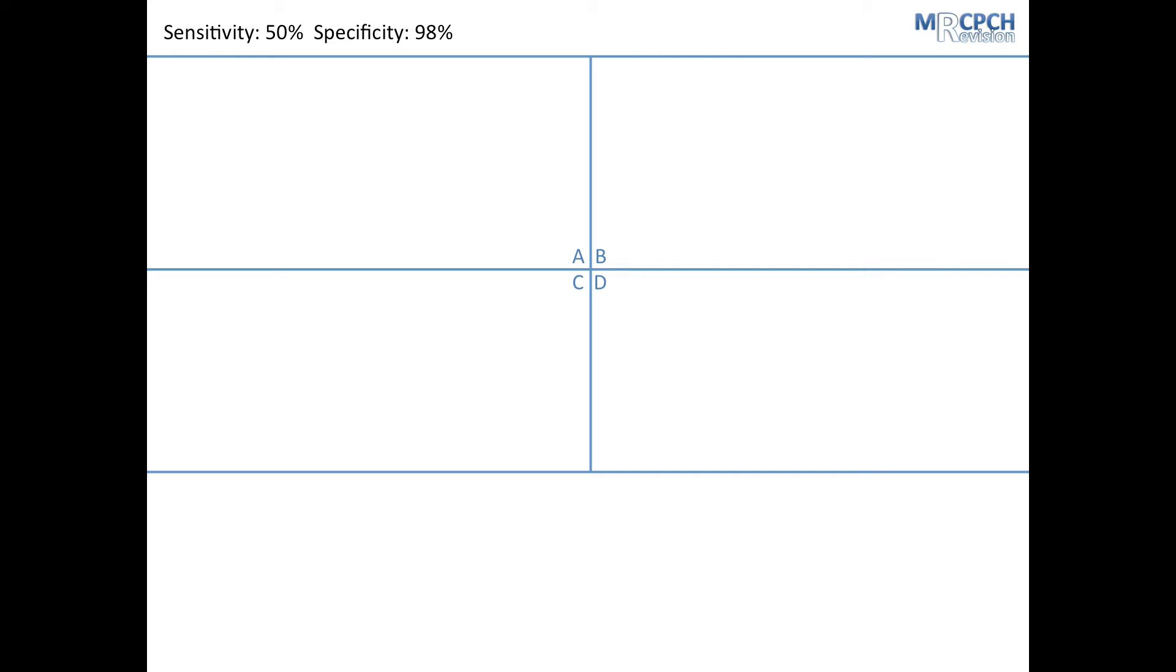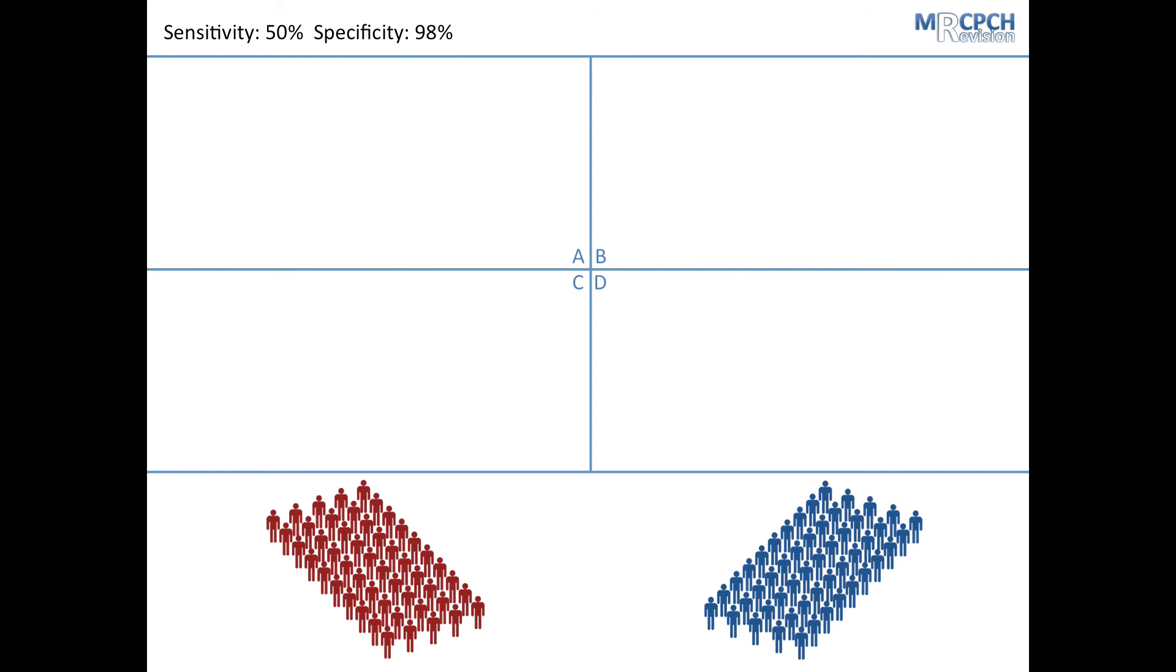Seeing as your differential diagnosis is between a virus and a UTI, we'll set the pretest probability of UTI at 50%. This means that out of every 100 people, 50 will have a UTI here in red and 50 won't here in blue. We know that sensitivity is A divided by A plus C. We know that sensitivity is 50% and that A plus C is 50. So, A is 0.5 times 50, which is 25.